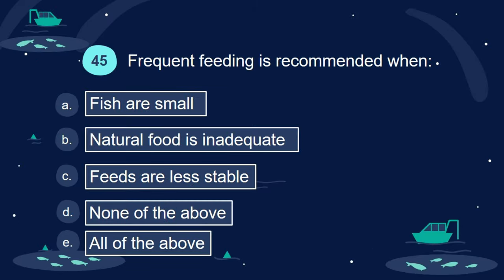Question 45. Frequent feeding is recommended when: A. Fish are small. B. Natural food is inadequate. C. Feeds are less stable. D. None of the above. E. All of the above.